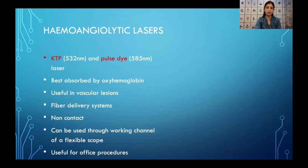When we talk about hemostasis, some lasers like the KTP or the PulseDye laser are specifically good hemoangiolytic lasers because they are best absorbed by oxyhemoglobin within the tissue. The KTP has a wavelength of 532 nanometers and the PulseDye has a wavelength of 585 nanometers, making these very useful for vascular lesions like papillomas and vascular polyps.